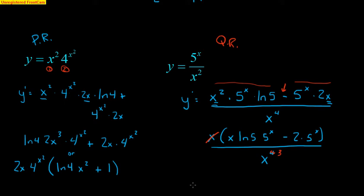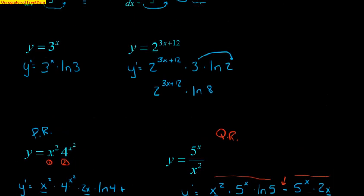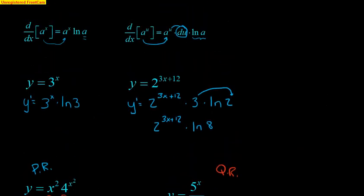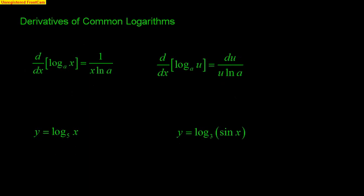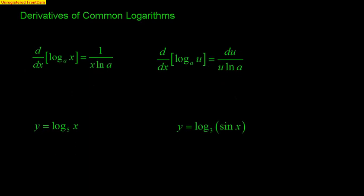So there are four quick examples of how to find derivatives of bases other than e. To review: it's the exact same base to the same exponent, times the derivative of the exponent, times the natural log of the base. The last thing we cover in this section is derivatives of common logarithms. I have two rules to match up with our derivative rules.